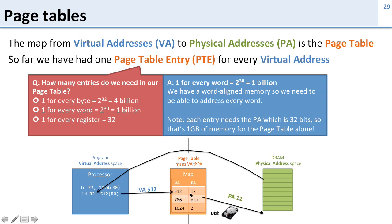And each one of these entries is pretty big — it has to say what's the virtual address and the physical address, so it's at least 32 bits. So that means this is about one gigabyte of memory just to keep track of this page table. This doesn't sound very good — we'd have to use up a whole gigabyte of memory just to keep track of the memory for one particular program. So how are we going to solve this?